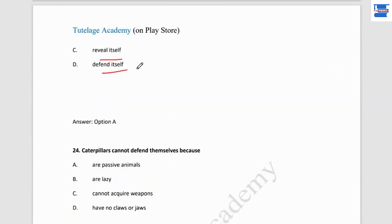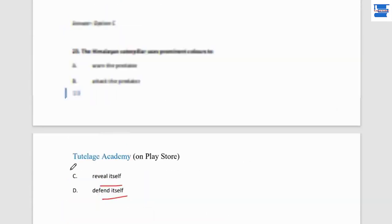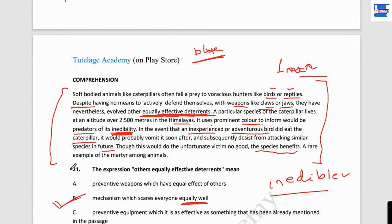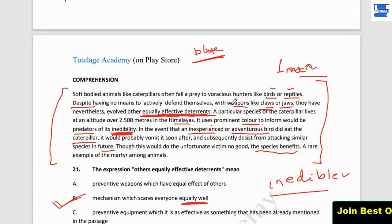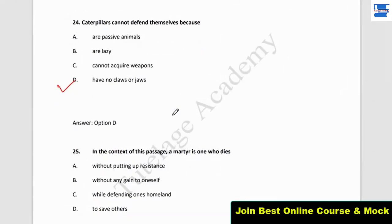Question 24: 'Caterpillars cannot defend themselves because...' Options include: they are passive animals, they are lazy, they cannot acquire venom, they have no claws or jaws. As per the passage, caterpillars have no claws or jaws — they have no means to defend themselves with such weapons. So the answer is: they have no claws or jaws.